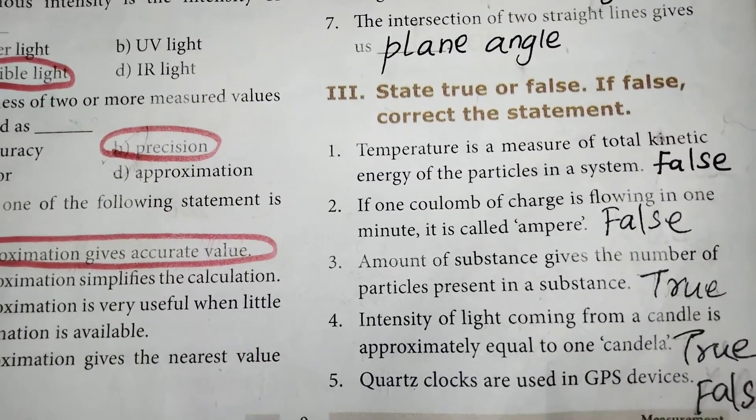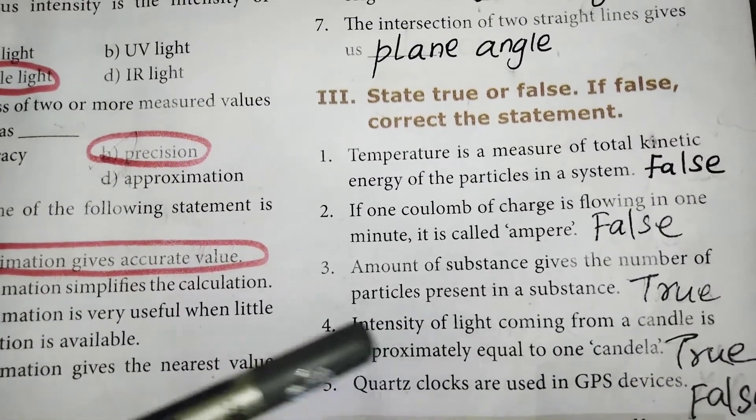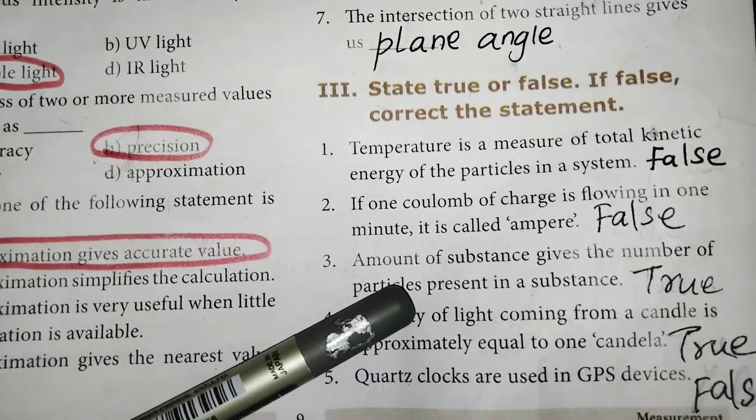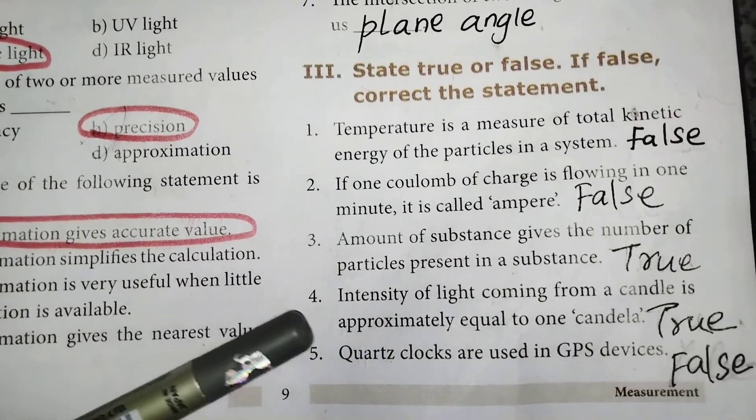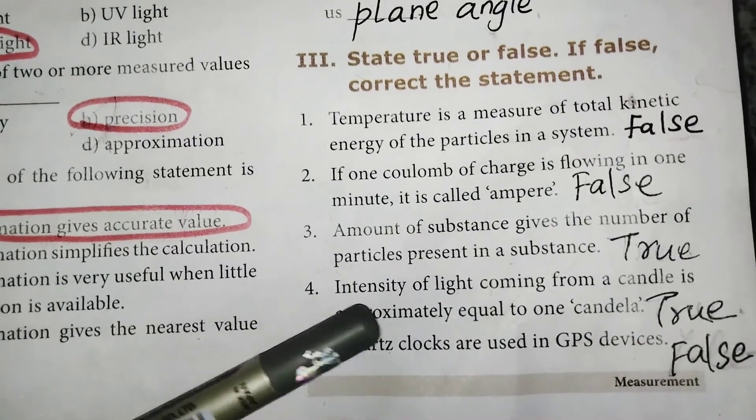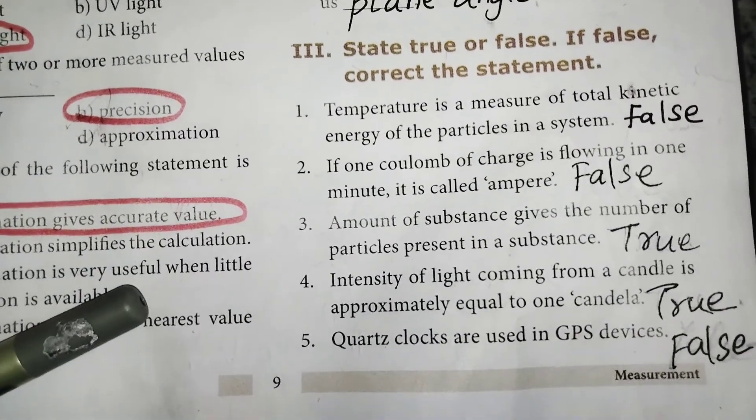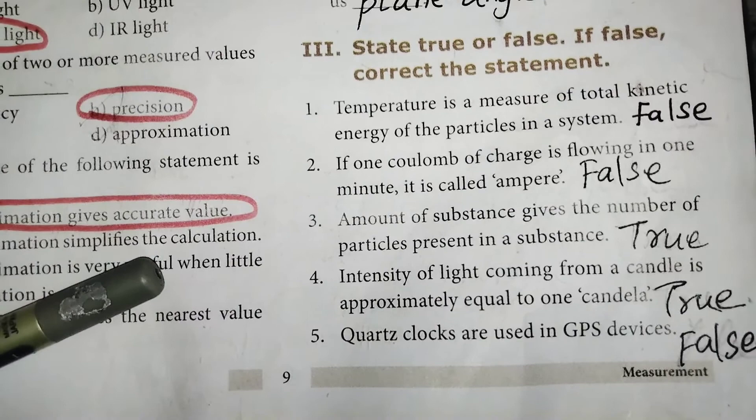Third one, amount of substance gives the number of particles present in a substance. True. Fourth one, intensity of light coming from a candle is approximately equal to one candela. True.